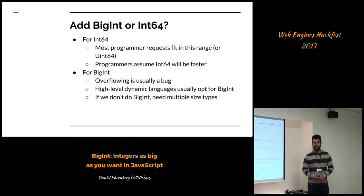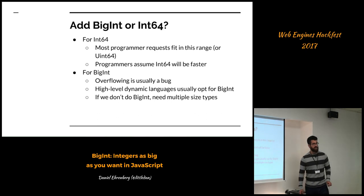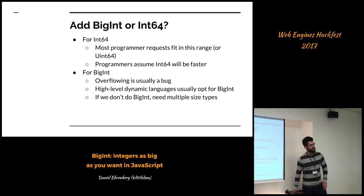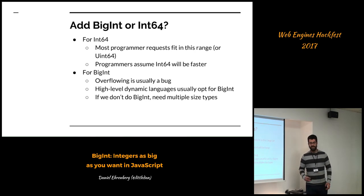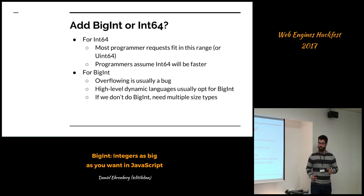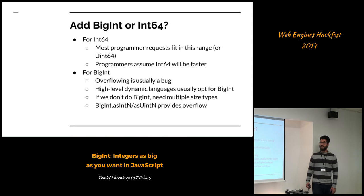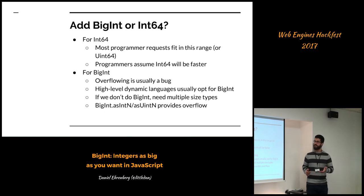If we didn't do BigInt and instead did size-restricted integer types, we would inevitably have to support multiple types. You would want to support both int64 and unsigned int64 because sometimes you want something that doesn't fit in the signed range — there are use cases for both. So if we choose one type that subsumes all the use cases because it has all of the integers in it, then this ultimately simplifies both the design, the user mental model, and the implementation.